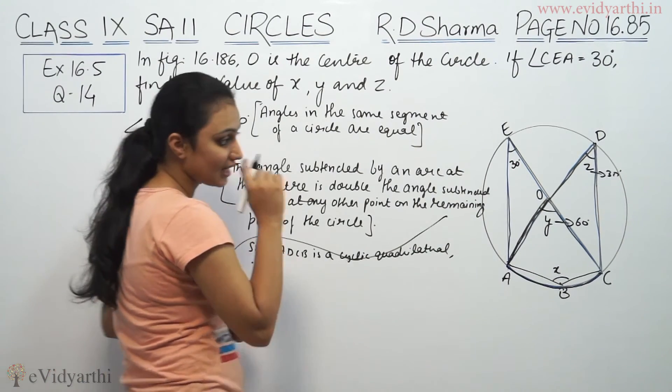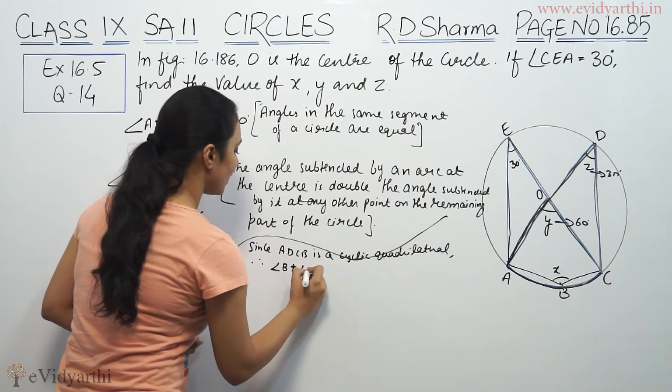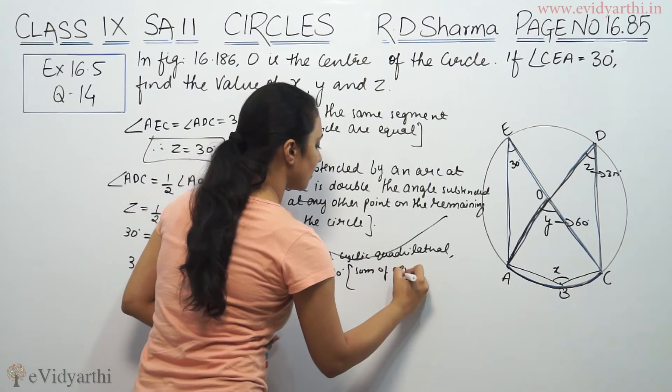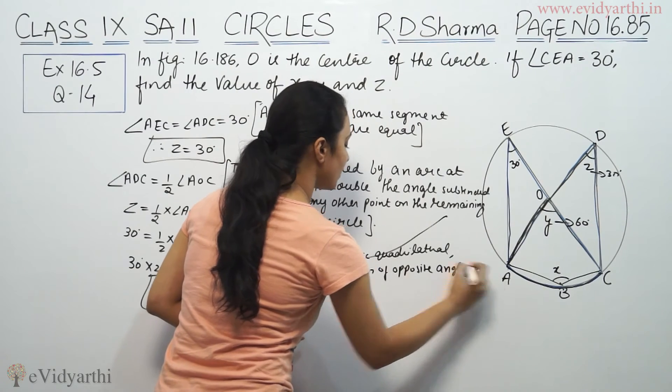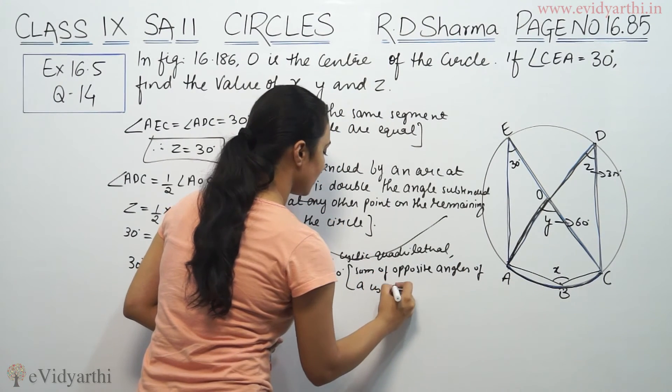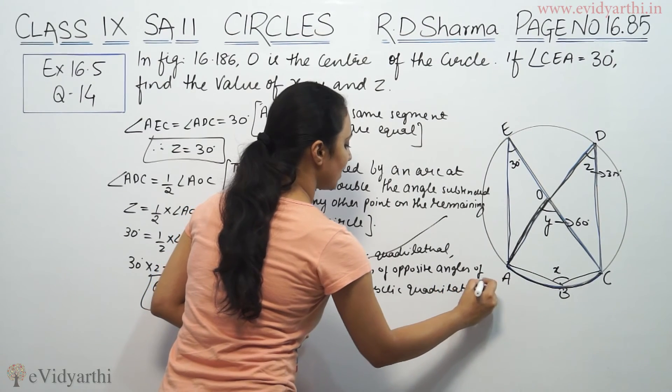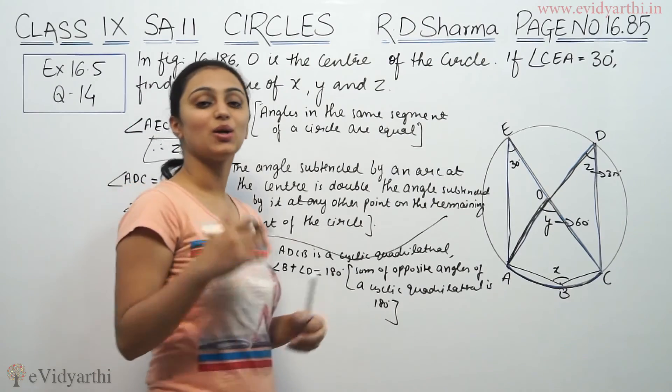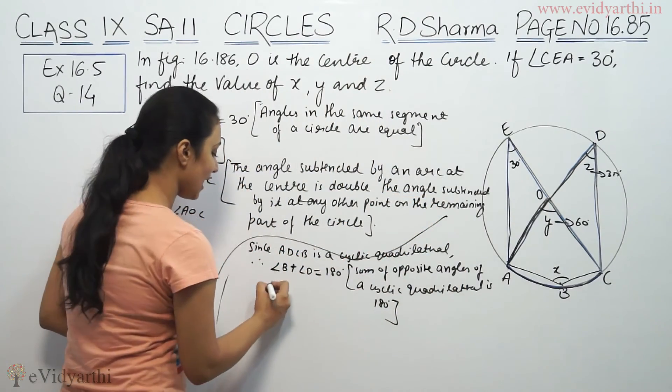Therefore in a cyclic quadrilateral, angle B plus angle D equals 180 degrees. We will write sum of opposite angles of a cyclic quadrilateral is 180 degrees.